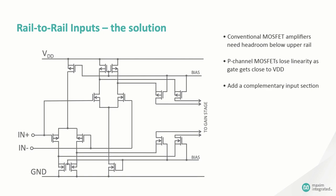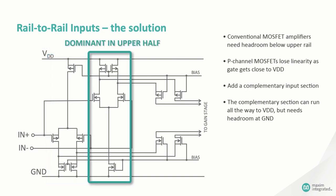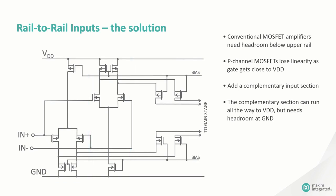The solution is to add another input section, this one built from N-channel MOSFETs. This input section can run in a linear way all the way to the upper rail and slightly beyond, but it has to stay above the lower rail by a little more than a volt. In this way, the P-channel FETs dominate in the lower half of the input range, while the N-channel FETs dominate in the upper half. Rail-to-rail input operation. Clever!